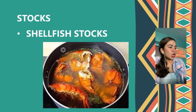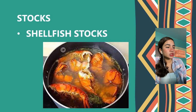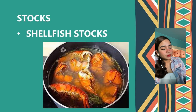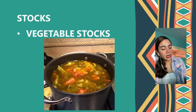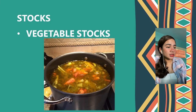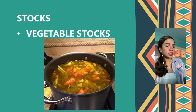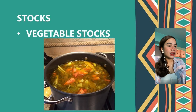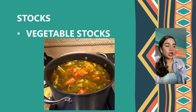Shellfish stocks are usually made from shrimp, lobster, mussels, or clams. Vegetable stocks have advantages over other kinds of stocks in that they are less expensive, less messy, and less time-consuming than their meat, poultry, or fish counterparts.